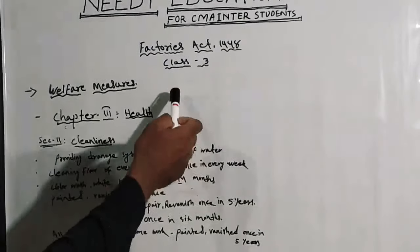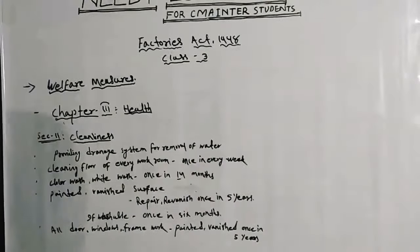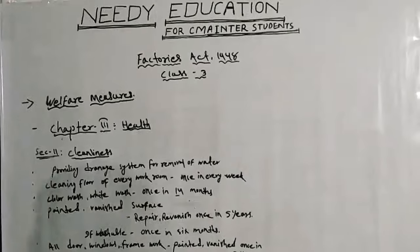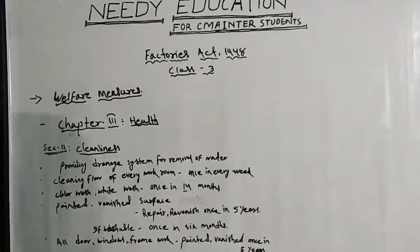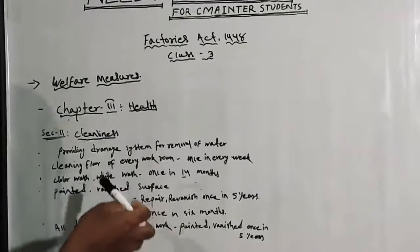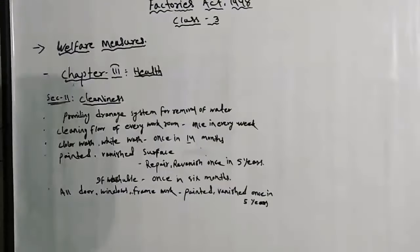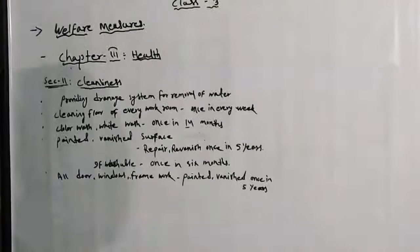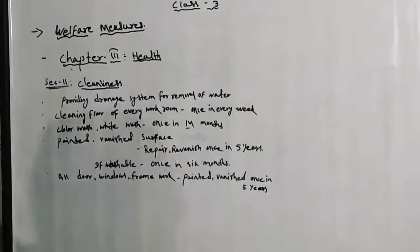So students, this is the third class of the Factories Act, 1948. Today, we will discuss Welfare Measures. Welfare Measures ka pehla jo hai, health hai. Chapter 3 — health ki welfare measures bata gaya hai.